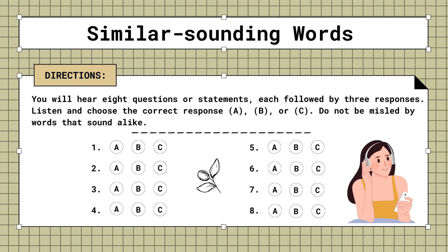4. Doesn't Sue work in personnel? A. She's gone to the hotel. B. She likes to sell. C. Yes, I think she does.